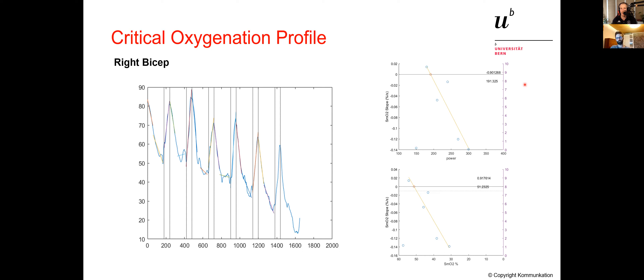What I'll probably do now is strap on three Moxies and do an hour at 170 watts, then on another day an hour at 200 watts — one just below and one just above the intercept — and see how everything behaves. If you're game, we could do a follow-up call and look at those results. Right now the left VL SM02 intercept is 37%, right VL is 39% — basically the same — whereas the bicep is 51%, which is interesting.